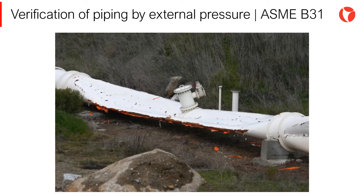A pipe might be subjected to external pressure for different reasons. It might be the case that a pipe is submerged in some fluid, or that vacuum is simply produced inside, as is the case with the image shown on the screen. Next, we will see a video of a pressure vessel under external pressure, where this type of failure is more common than in pipes. The failure mechanism and calculation procedure is the same in both cases.